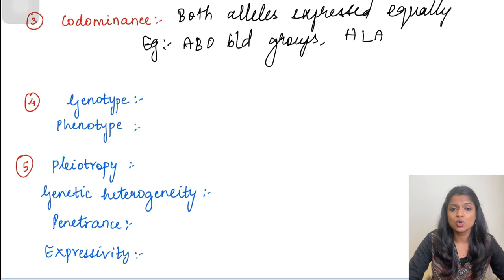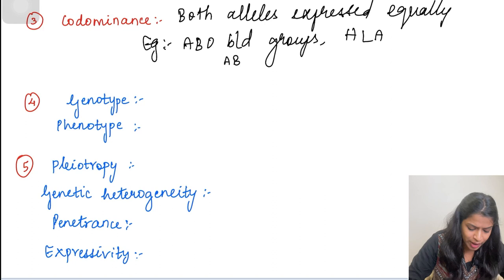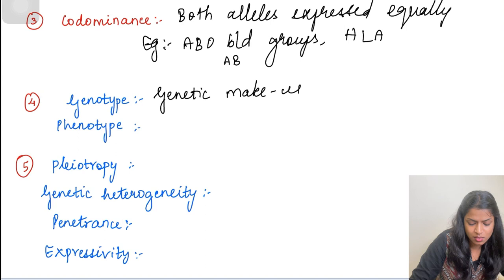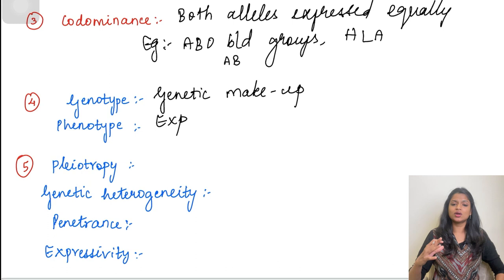Genotype is nothing but the genetic makeup — the representation of alleles such as AA or Aa. Phenotype is the physical expression — whatever the end result of this genetic makeup is and how it is expressed, that is the phenotype.